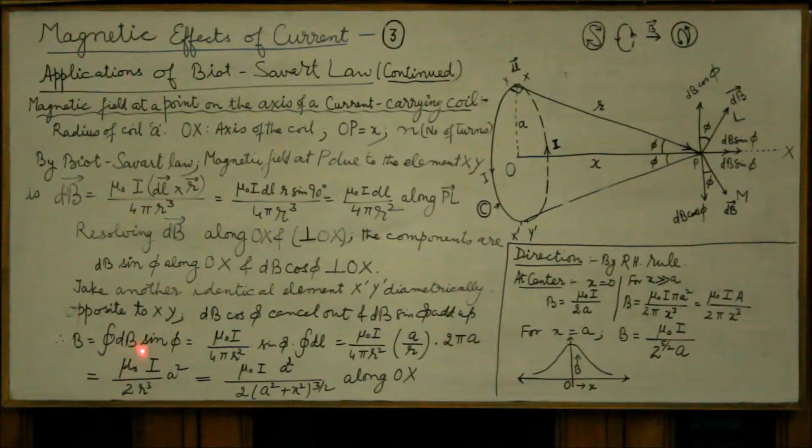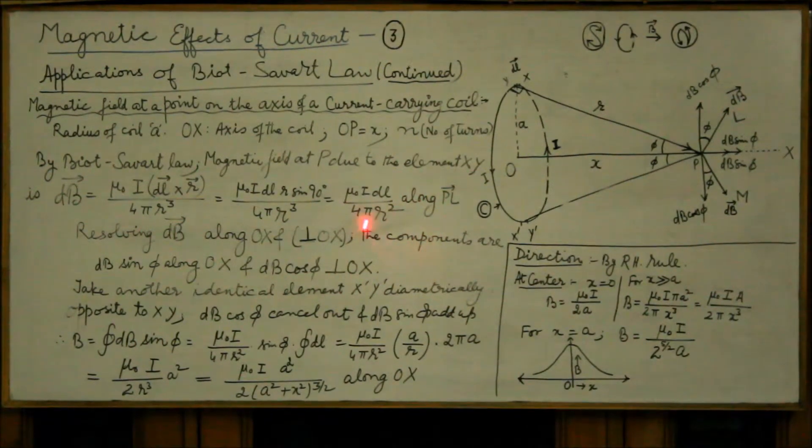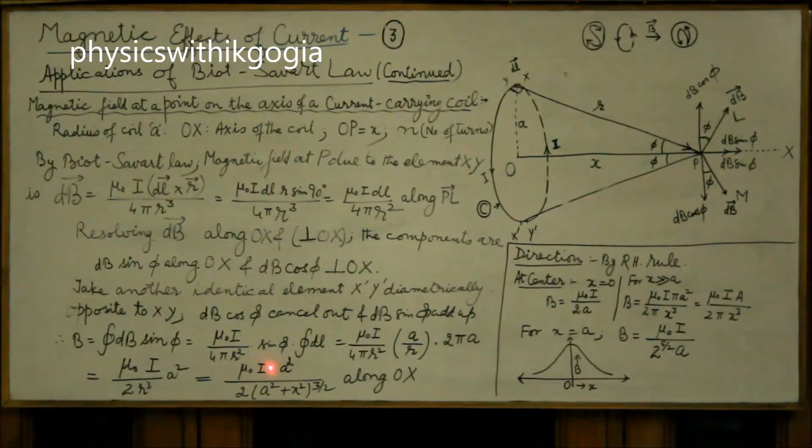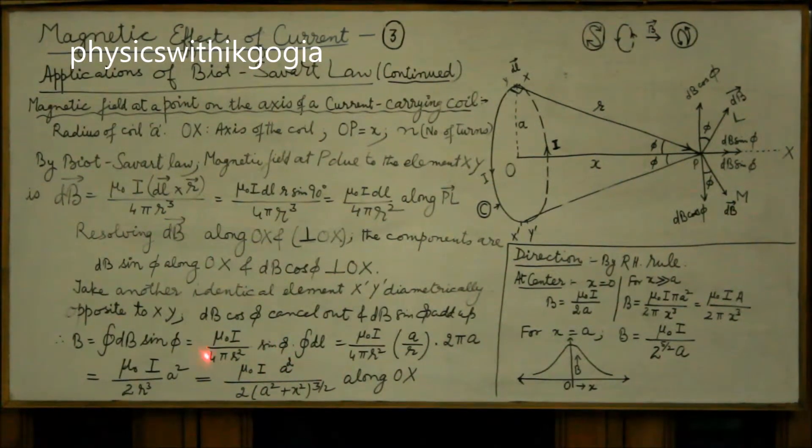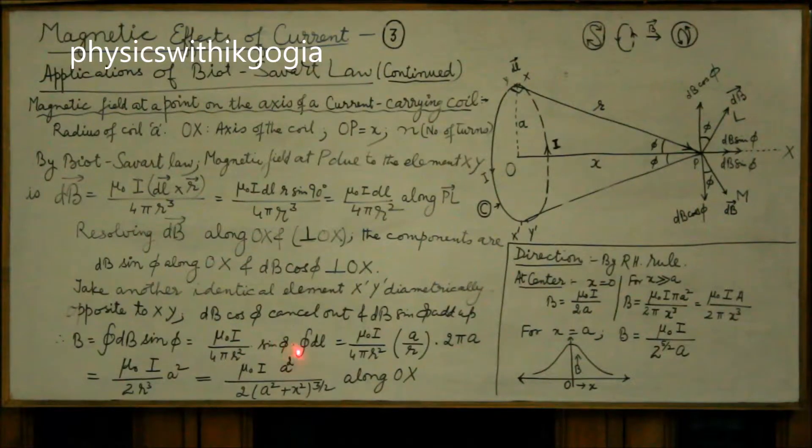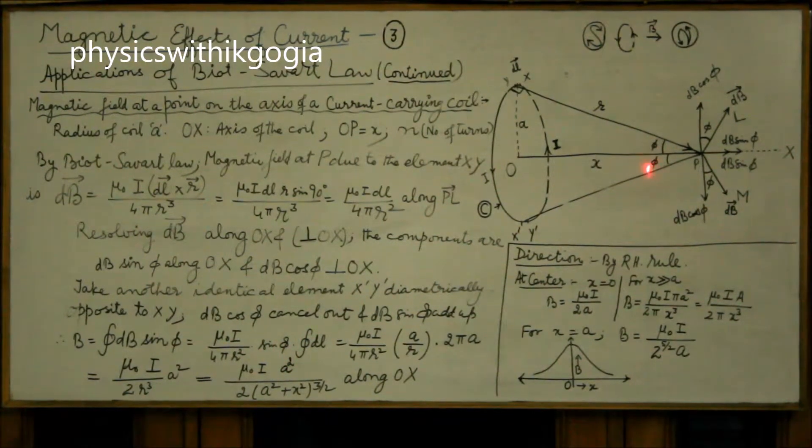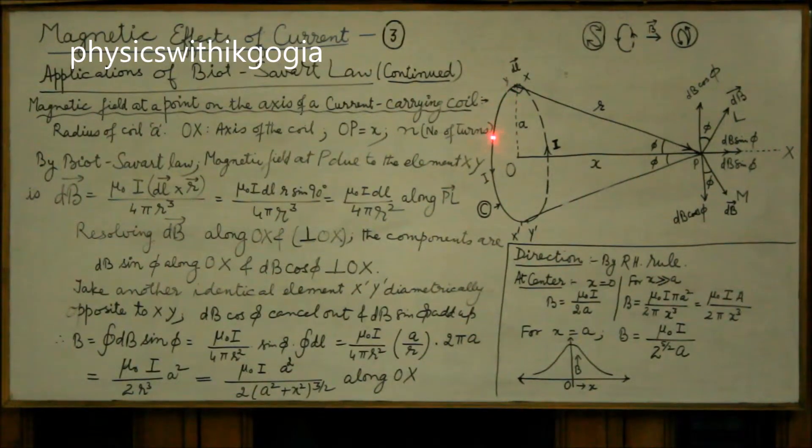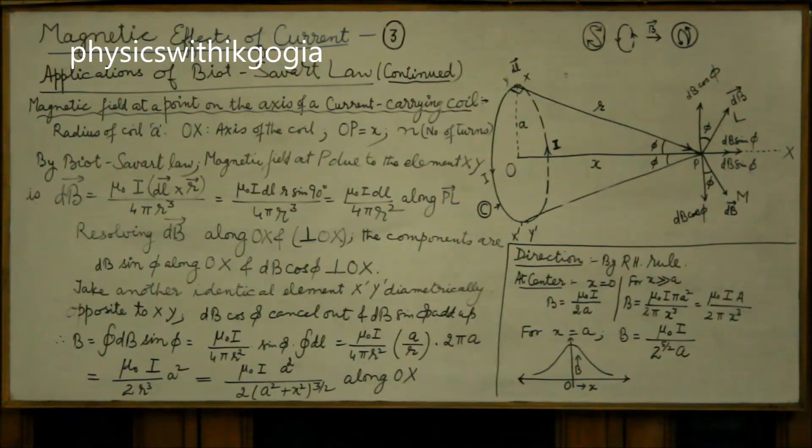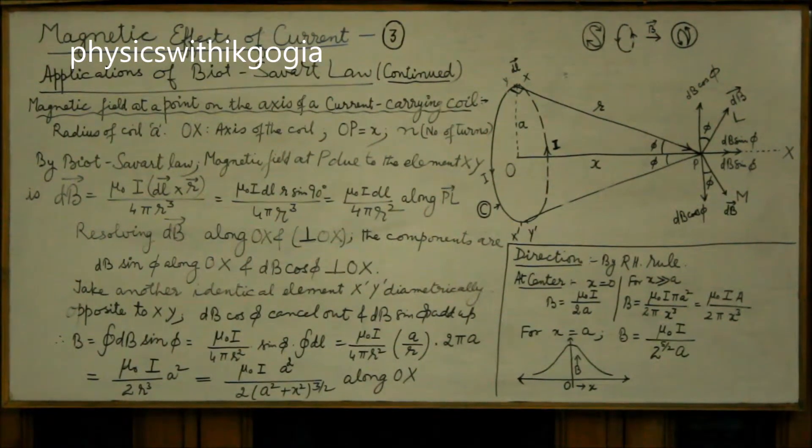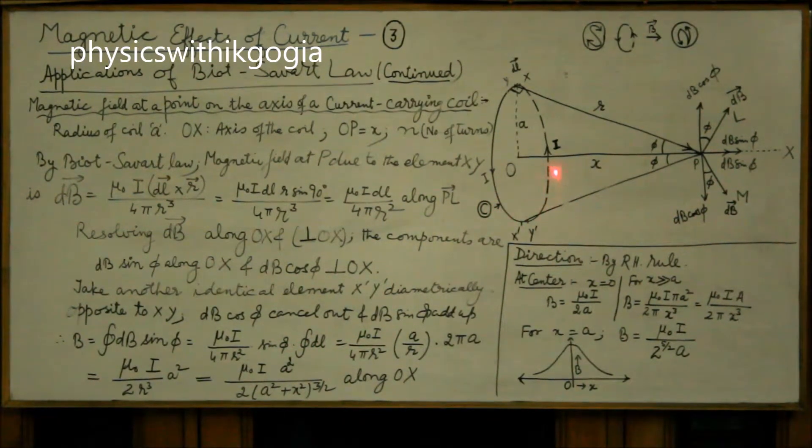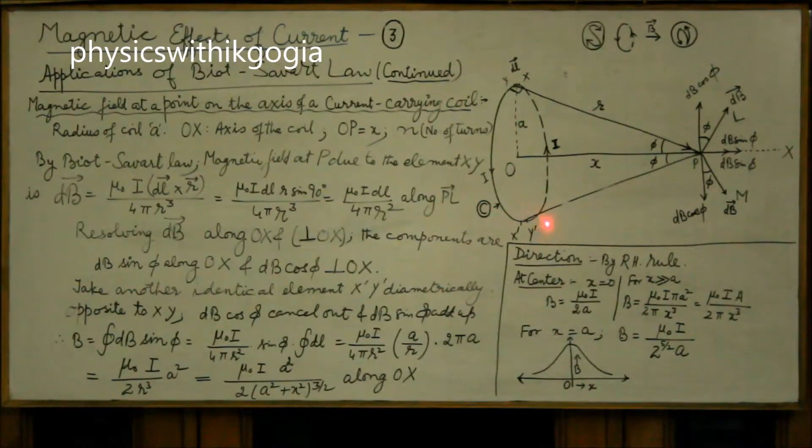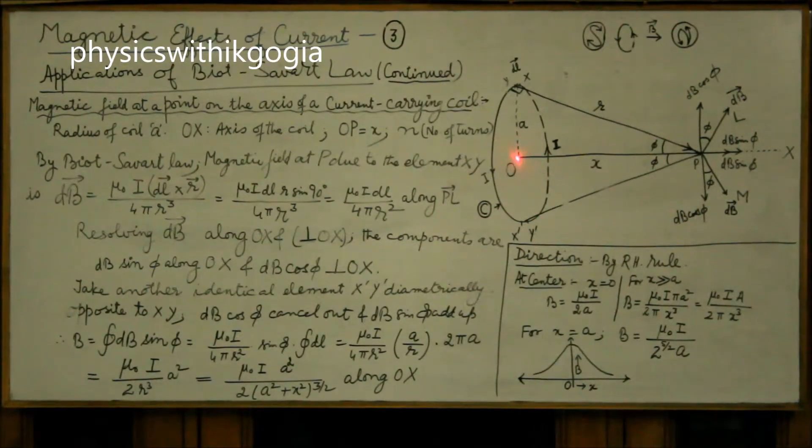dB sin φ value you already have here: μ₀ i over 4π r² sin φ dL. All these are constant factors, φ is constant by symmetry. It will be same for all such small elements which we divide this coil. So you have to integrate dL only and integral of dL will be circumference of this coil that is 2πa.